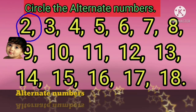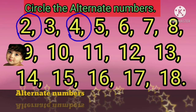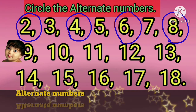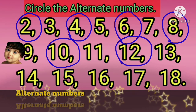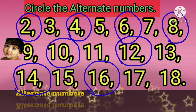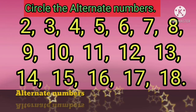Yes ma'am, here 2, then 4, then 6, then 8, then 10, then 12, then 14, then 16, and last 18 are the alternate numbers. Okay, very good. You are very intelligent. I know you all understood what alternate numbers are.